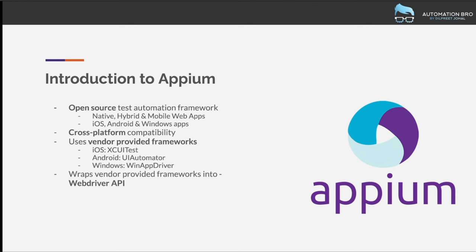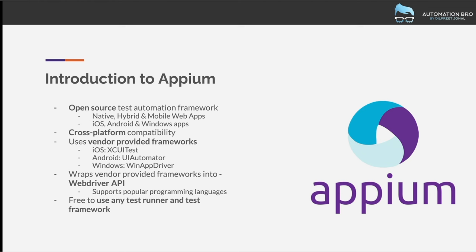If you're familiar with the WebDriver API this will look quite familiar. WebDriver supports multiple programming languages, and Appium clients support the same — Java, JavaScript, Python, Ruby, and so on. Because of these existing clients you can use any test runner and framework with Appium. In our case we'll use JavaScript as our programming language, Mocha as the test runner, and WebdriverIO as the test framework. Because of all these amazing features, Appium has become one of the most popular open source test automation frameworks with high industry demand.